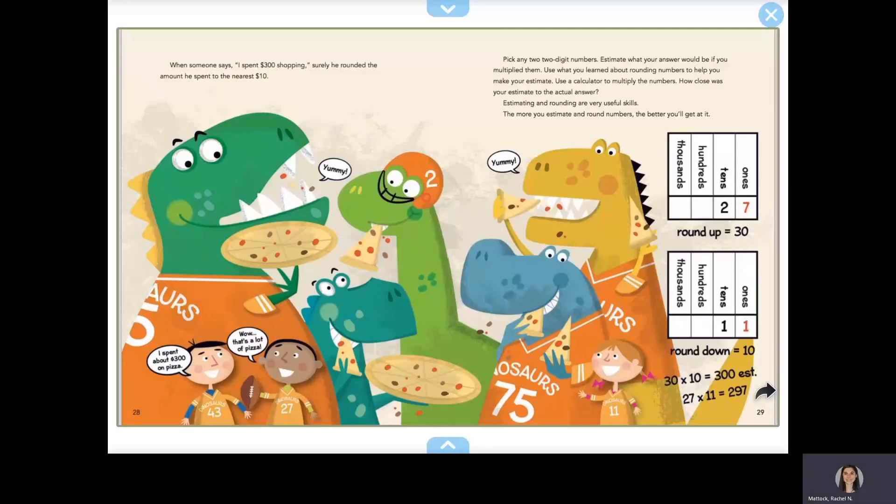Pick any two-digit numbers. Estimate what your answer would be if you multiplied them. Use what you learned about rounding numbers to help you make your estimate. Use a calculator to multiply the numbers. How close was your estimate to the actual number?